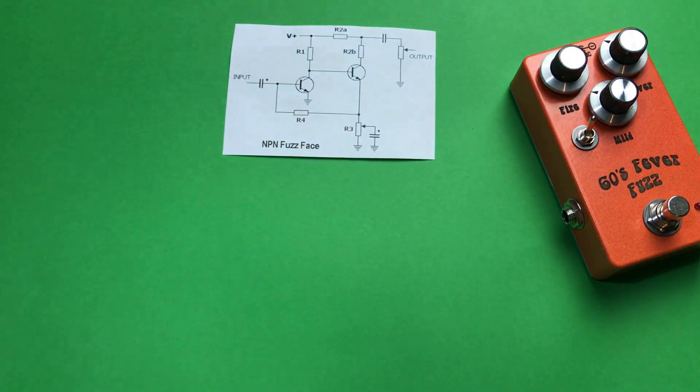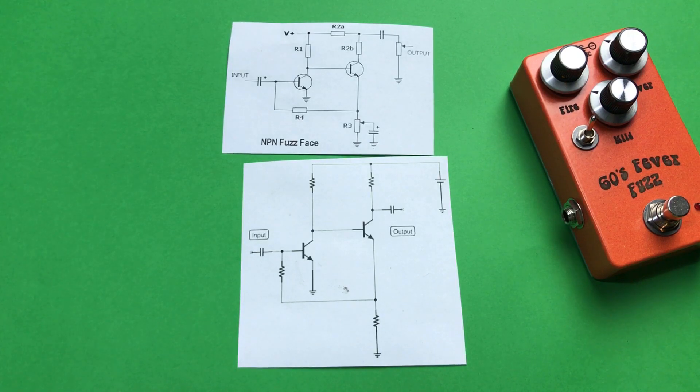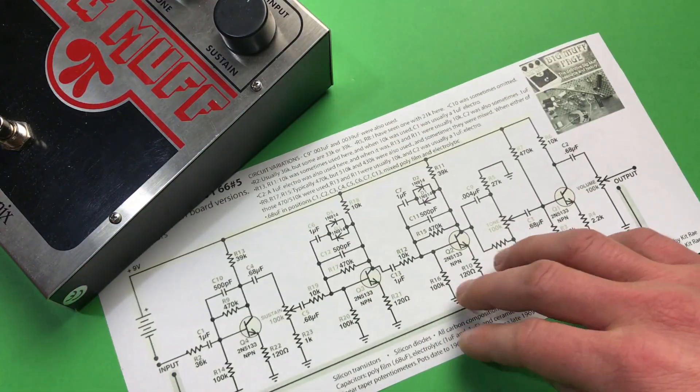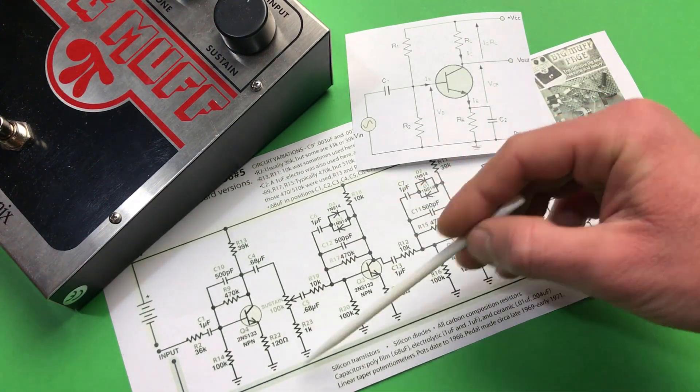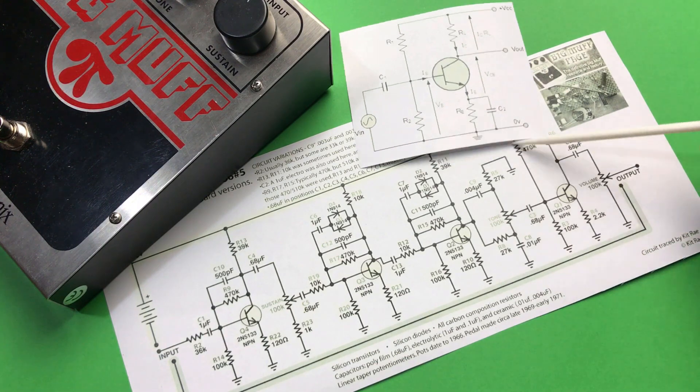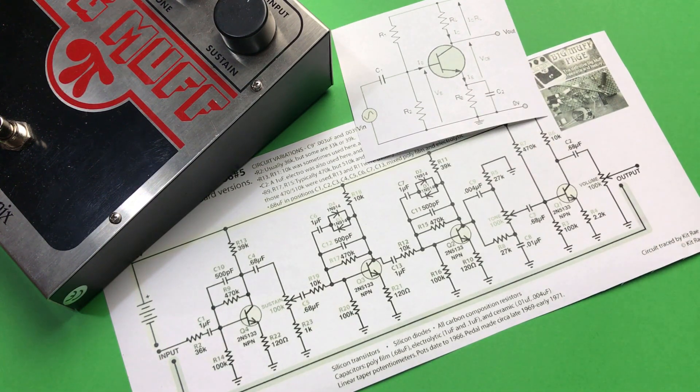So maybe in Fuzz Face we will find more magic. Actually, nope. It's also a basic amplifier. Okay, so maybe Big Muff. Nope, it's also using a basic common emitter amplifier with clipping on two stages, and tone is balanced between two low-pass and high-pass filters.